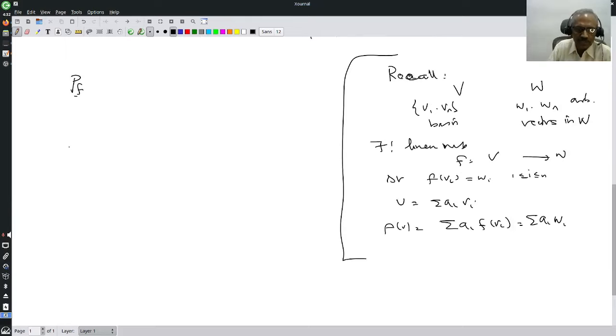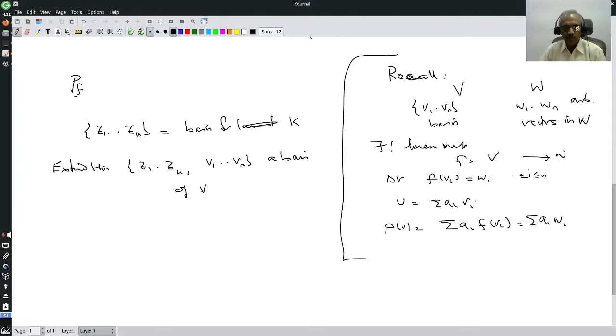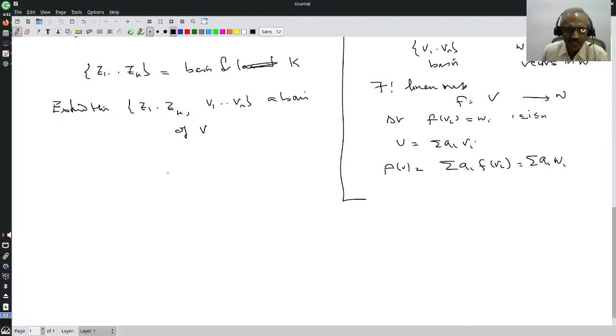So we need only these two things. How will I do that? Let Z1 to Zk be a basis for K, and extend this, Z1 to Zk union V1 to Vr, as a basis of V. You are going to use all beautiful basic results of linear algebra. Any linearly independent set can be extended to a basis, so we extend this.